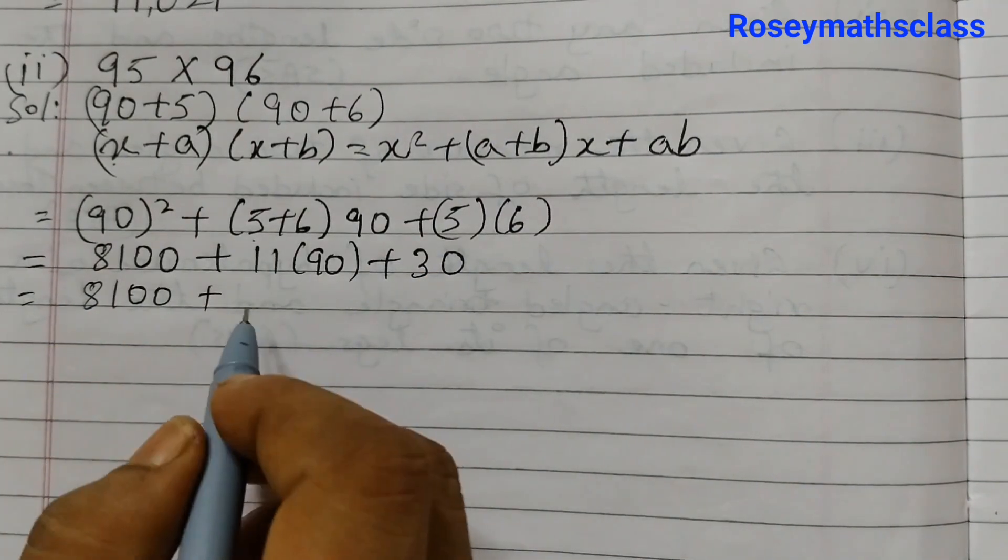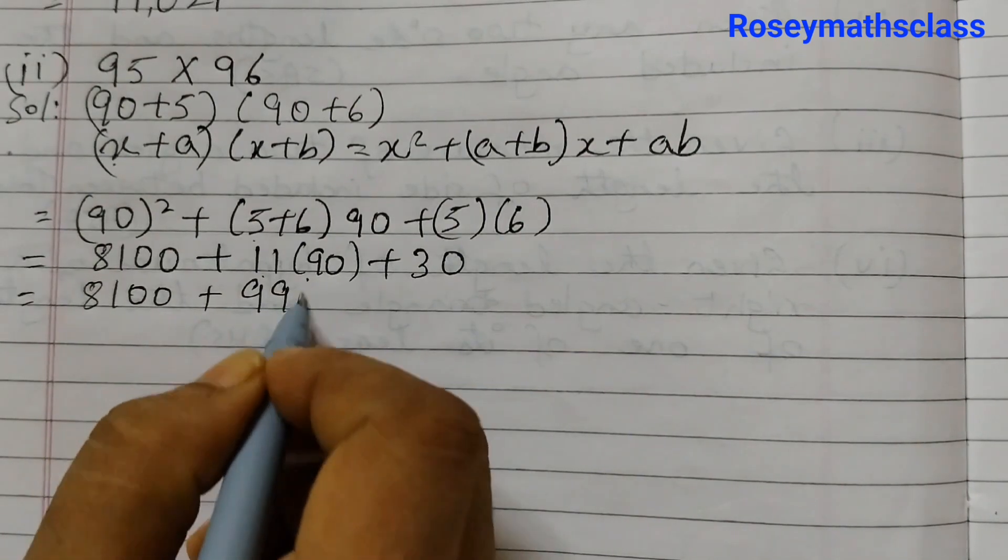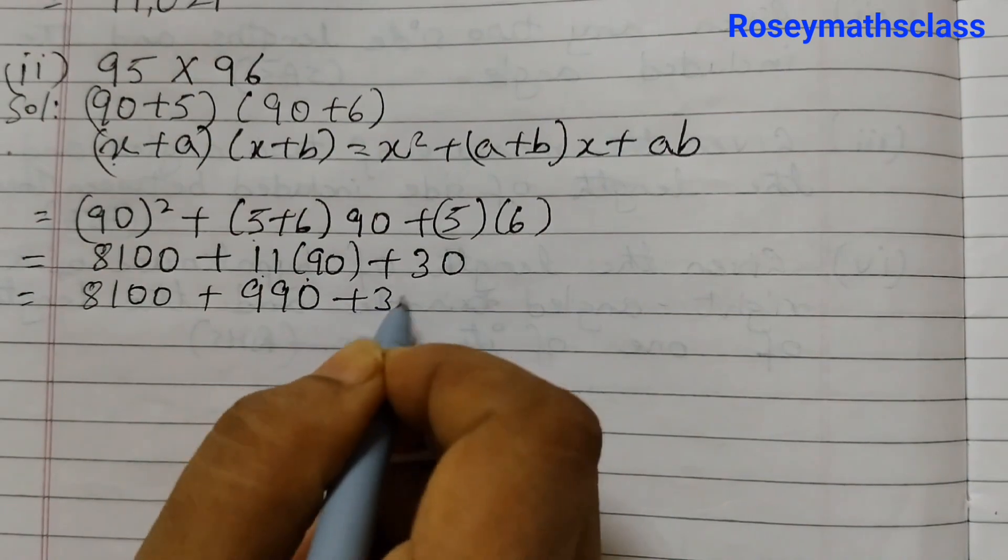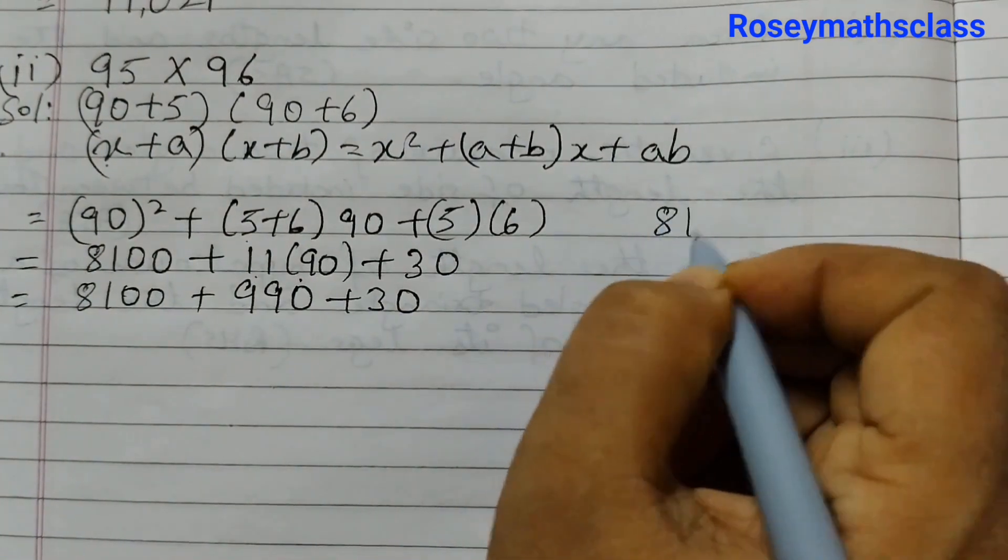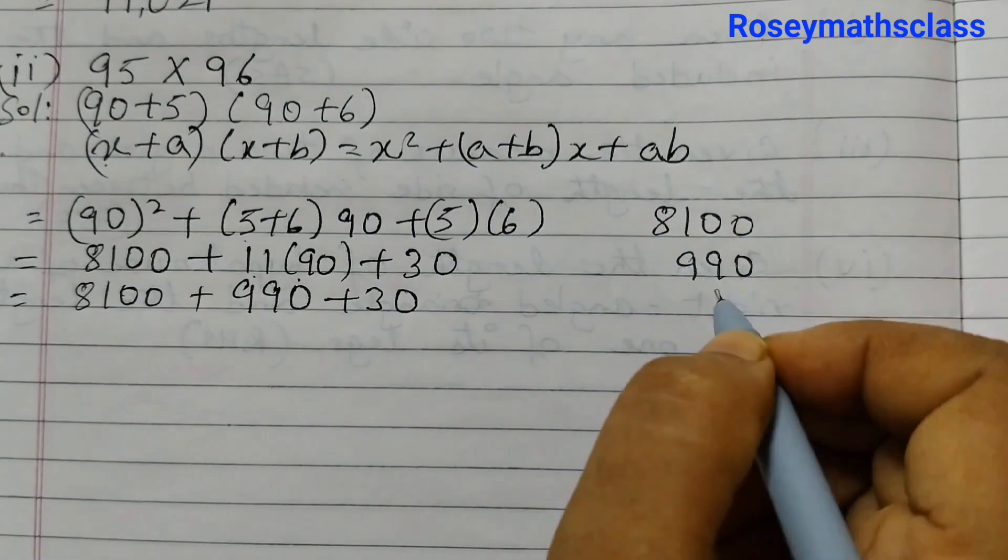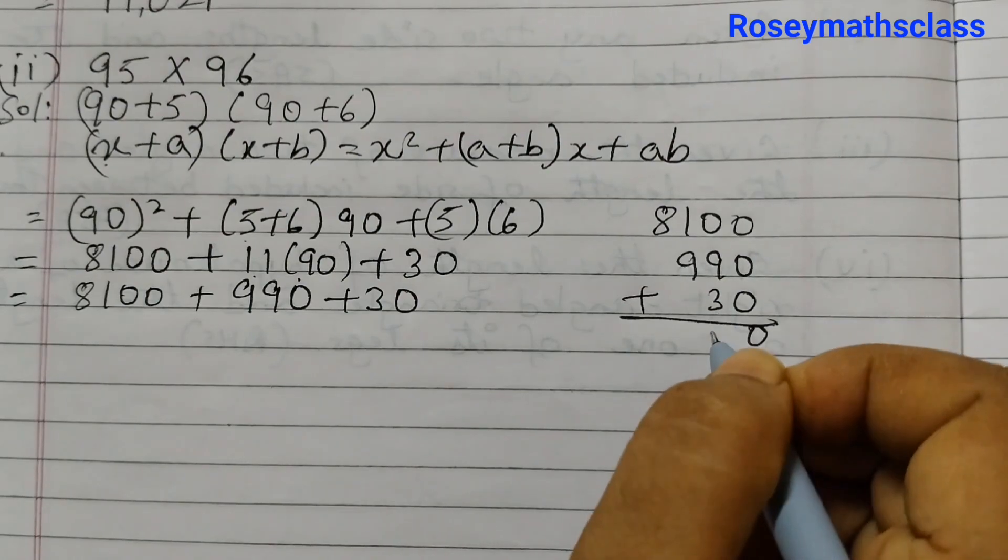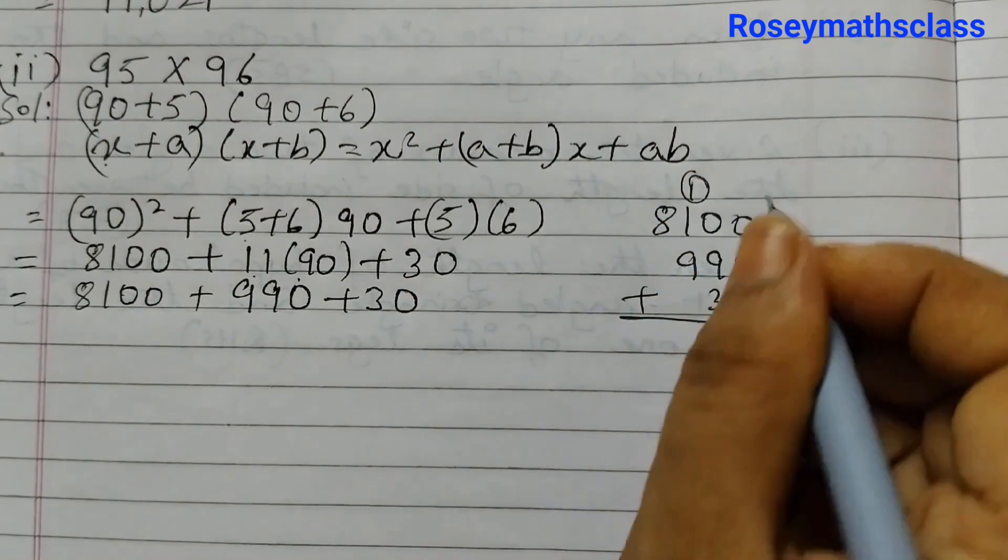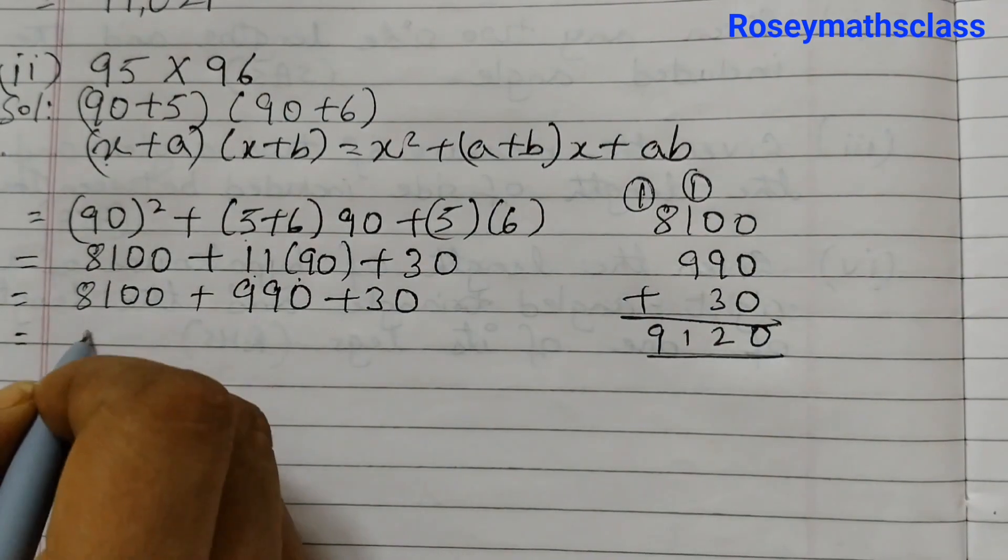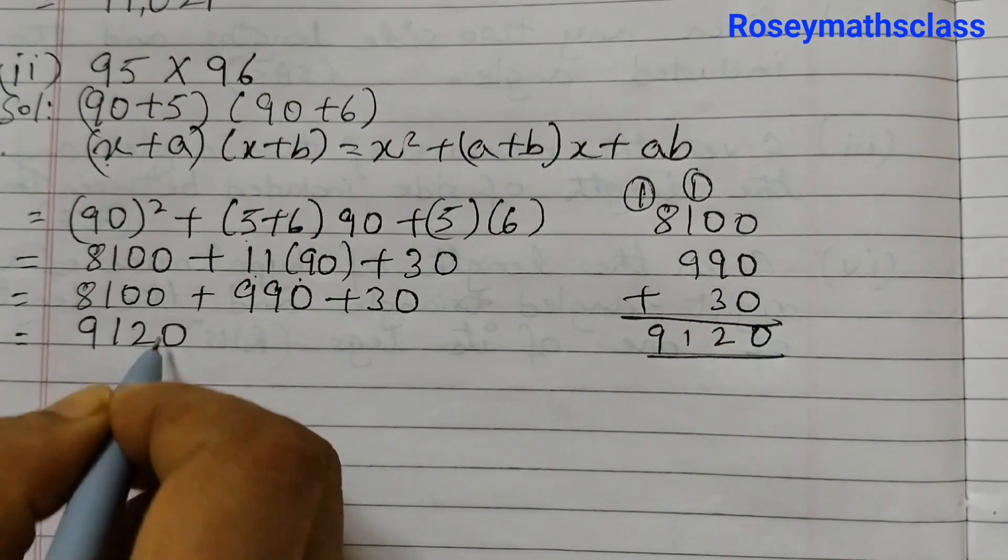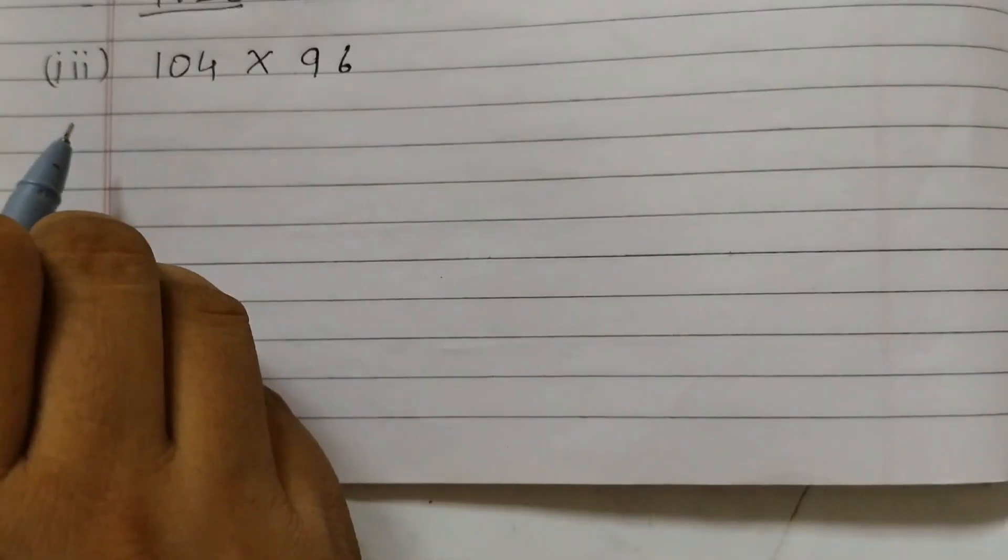8,100 plus 11 into 9 is 99 and then put a 0, so that's 990 plus 30. We shall add this up: 8,100, 990, and 30. Add: 0, 12, 11, 9. 9,120 is the answer for the second one.